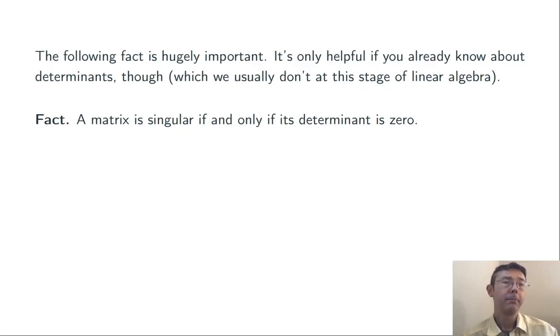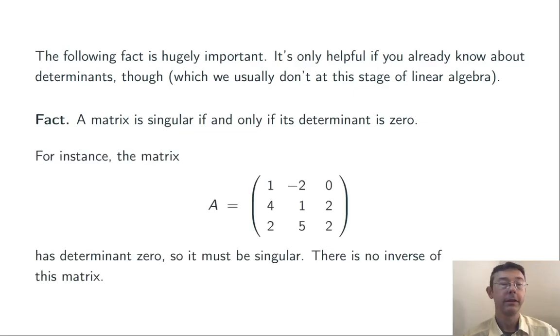Here's a fact that becomes hugely important later on. You have to know what determinants are for it to really make sense, so if you don't know what those are yet, don't worry, you'll get to it. There's a simple test for when a matrix is singular, a square matrix, that is. A matrix is going to be singular if and only if its determinant is 0.